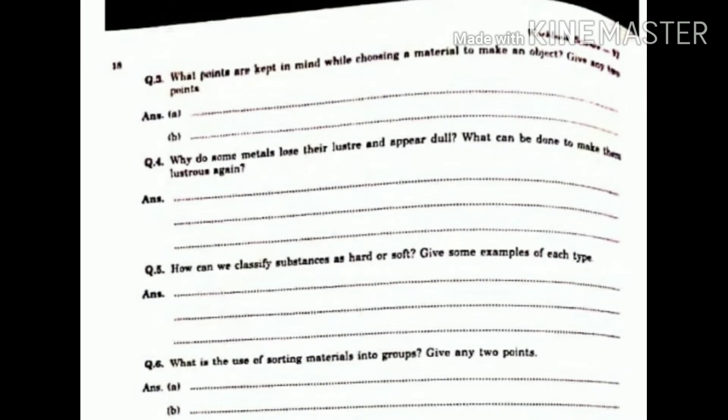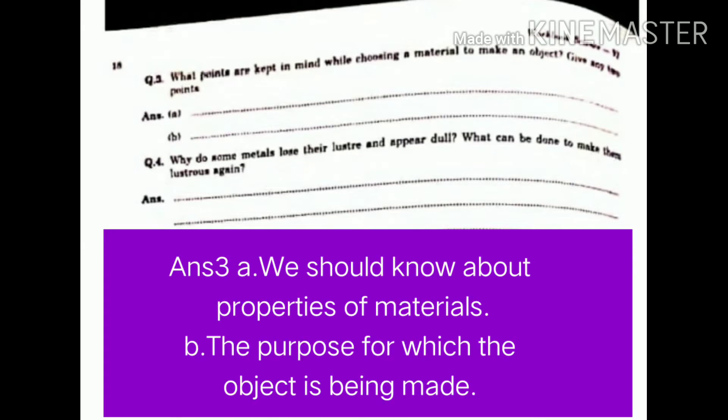Question 3. What points are kept in mind while choosing a material to make an object? Give any two points. Answer. A. We should know about properties of material. B. The purpose for which the object is being made.